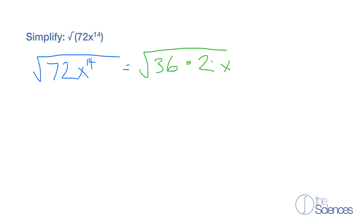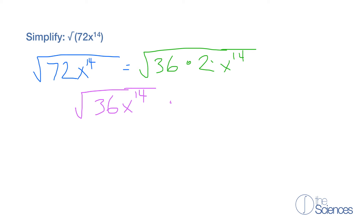We also have x to the 14th power. So now we have the square root of 36x to the 14th power times the square root of 2.